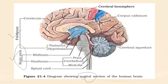The forebrain is the major intellectual center, subdivided into the cerebrum, thalamus, and hypothalamus. These three — CTH — comprise the forebrain region.